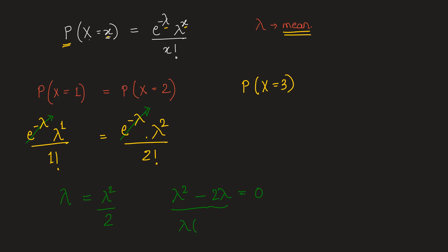Taking lambda common, we have lambda times lambda minus 2 equal to 0. So we have two solutions: one is lambda equal to 0, or lambda minus 2 equal to 0, which gives us lambda as 2.